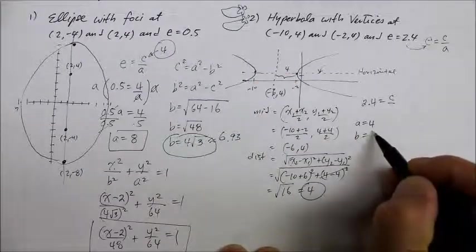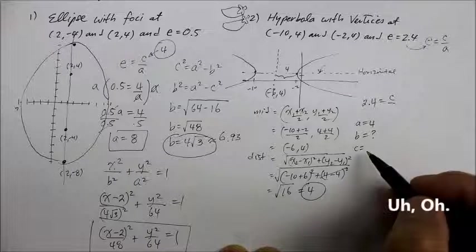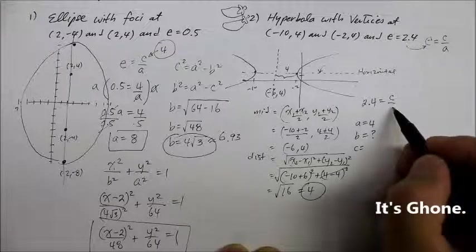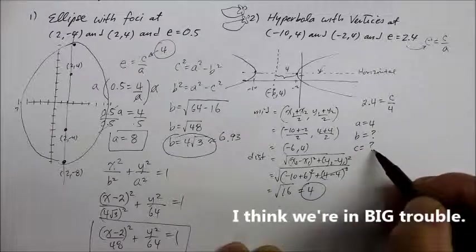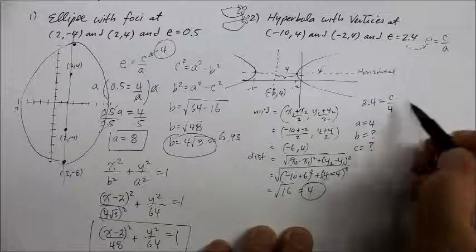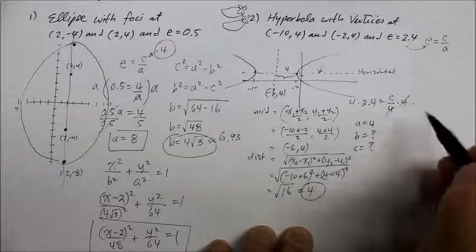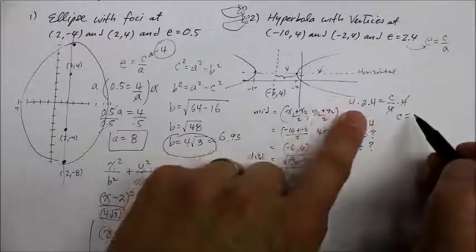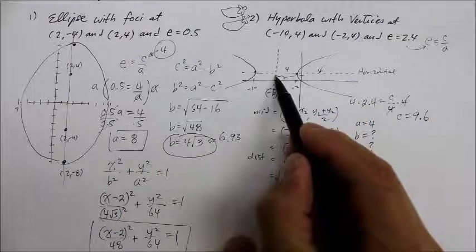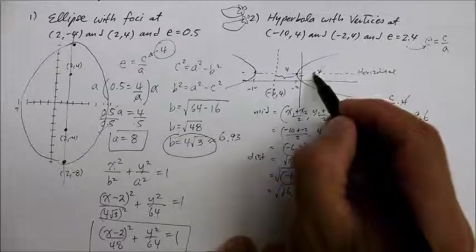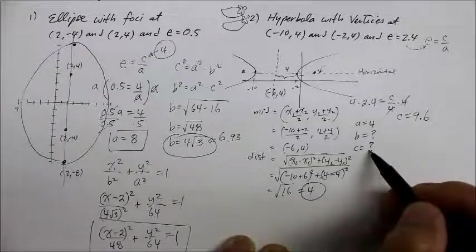The b is unknown, and c we also don't know yet. Using e equals c over a with e = 2.4 and a = 4: multiply both sides by four, so c equals 4 times 2.4, which is 9.6. So the focus is 9.6 units away from the center. Now I have a equals four and c equals 9.6.